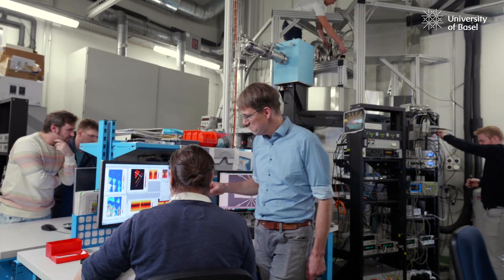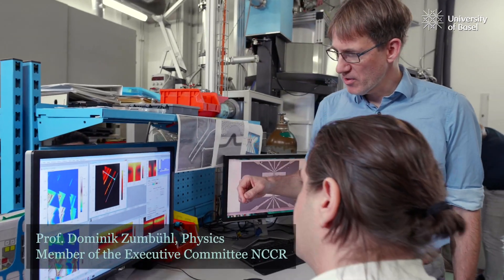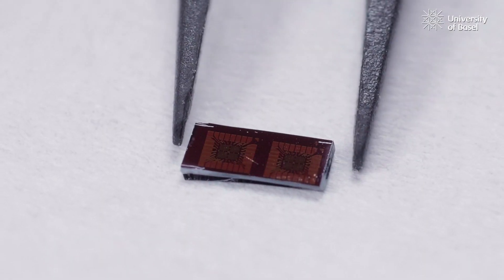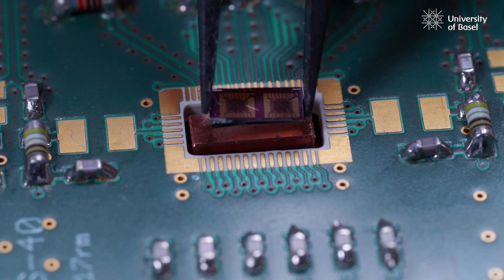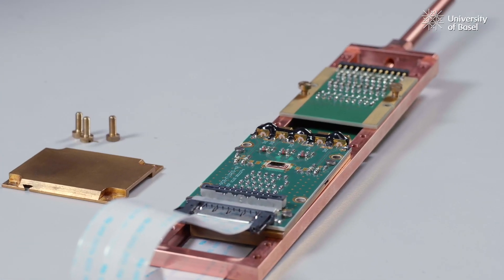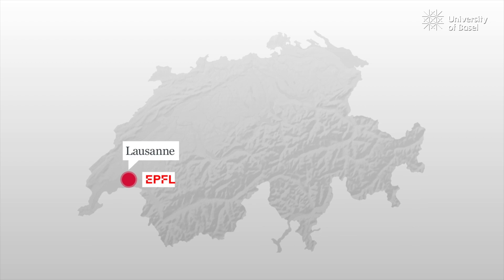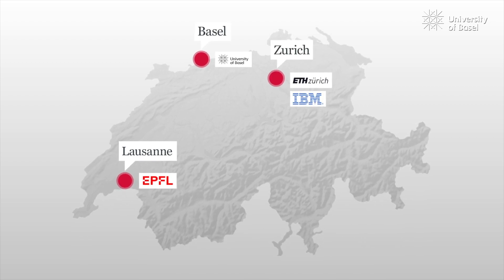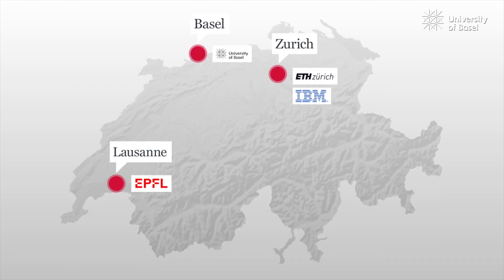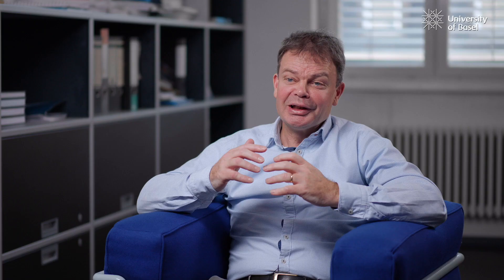We'll then test these prototype devices in a variety of ways. A key goal is to optimize our designs as quickly as possible by completing a design-fabricate-test cycle within a few weeks. This deep connection between our industrial partner and the university groups, all managed by the University of Basel, will allow us to make efficient progress. Our goal is very ambitious — via Project SPIN, we'd like to make key contributions to the development of quantum computing.